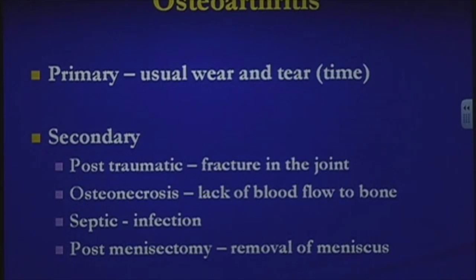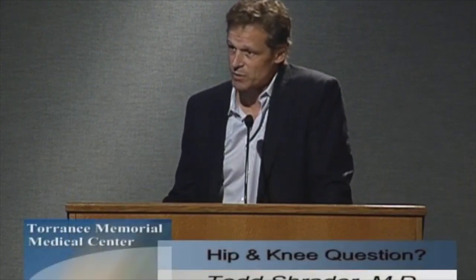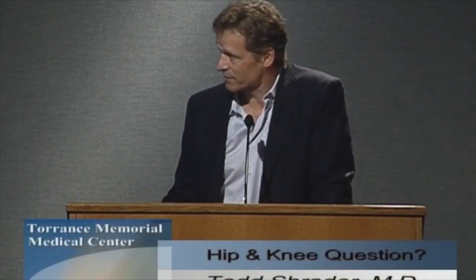Osteoarthritis is the most common type we see. There are also secondary forms where patients have a fracture in the knee joint causing incongruity leading to arthritis. Osteonecrosis — a lack of blood flow to the bone — can also cause osteoarthritis. The two most common causes of osteonecrosis are excessive alcohol use and chronic oral steroids, though most cases are actually idiopathic, meaning we don't know the cause. Septic arthritis from a joint infection can also cause significant destruction.